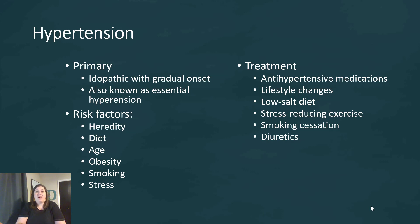To treat hypertension, we can use anti-hypertensive medications — blood pressure medications. A major component is lifestyle change, including education about what you can modify. A low salt diet is helpful because less salt means less water retained, lowering blood pressure. Stress-reducing exercise is important. Smoking cessation — stopping smoking — can help your heart more than almost anything else. Diuretics can also help by eliminating excessive fluid the body is holding, which can raise blood pressure.